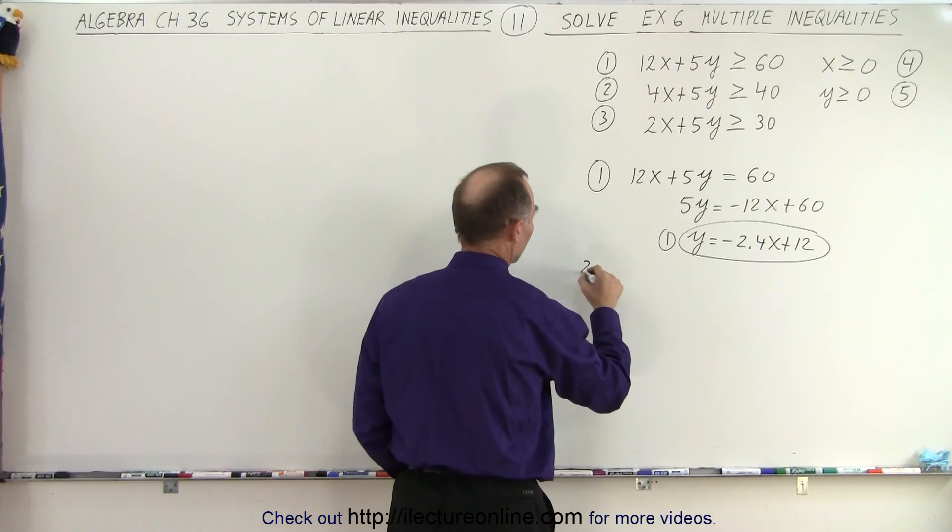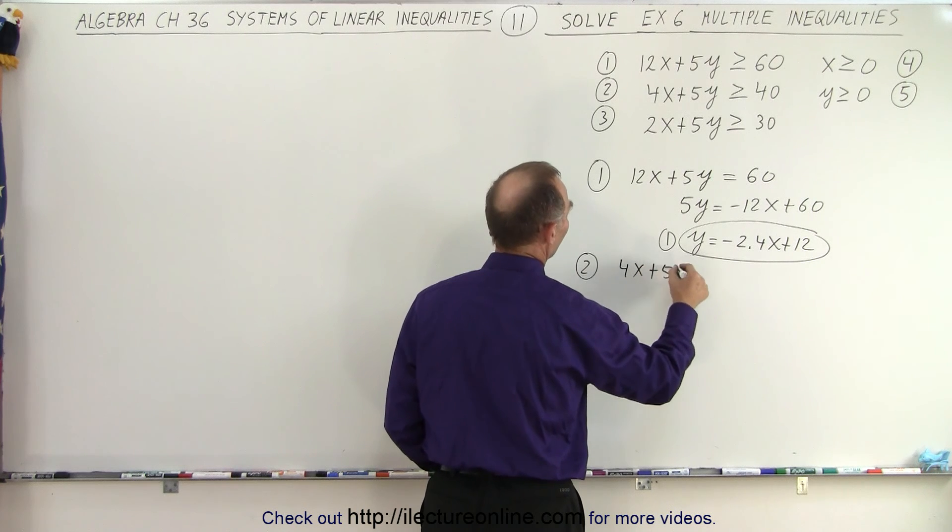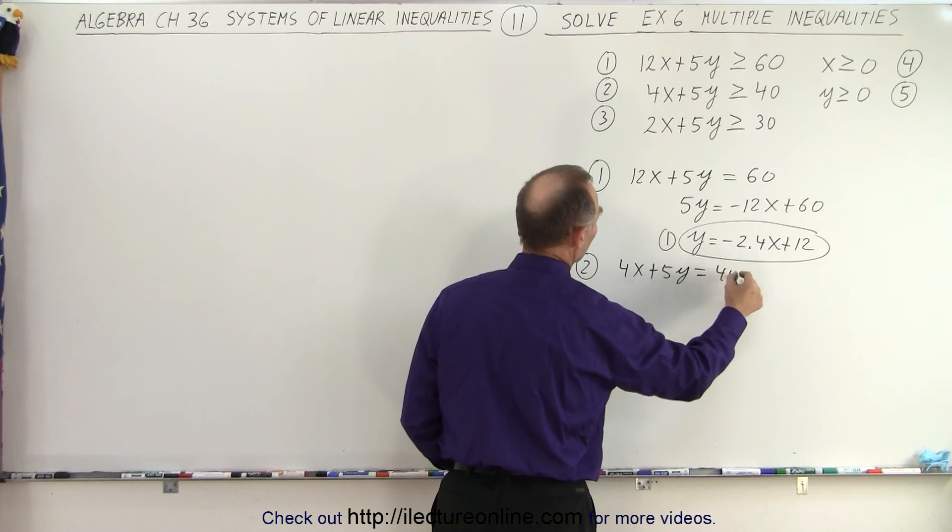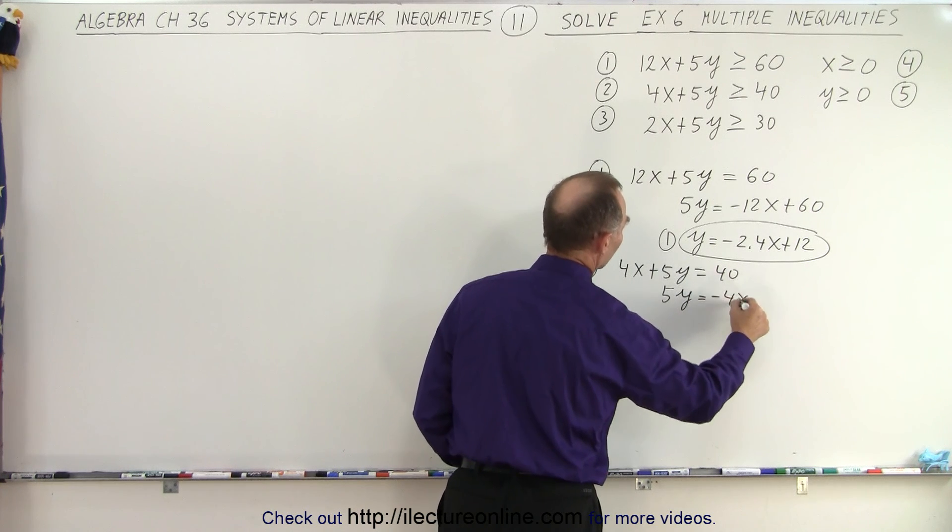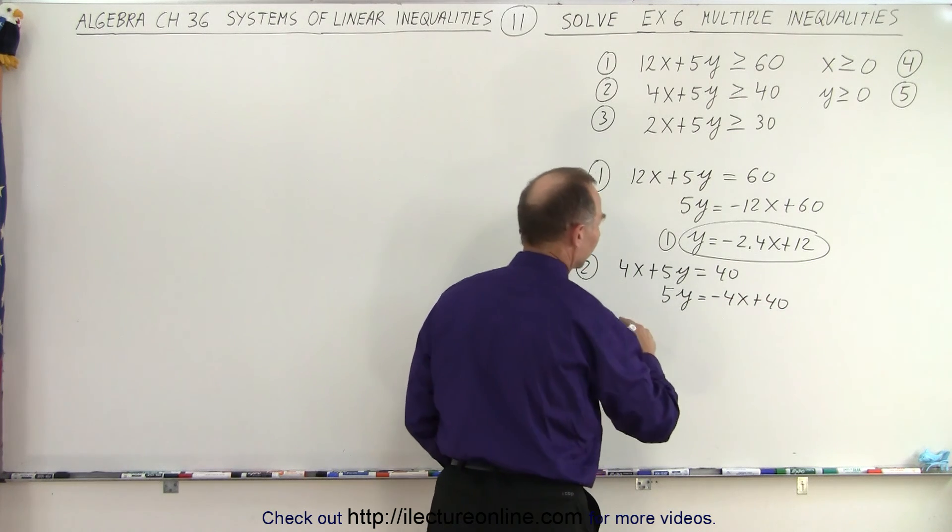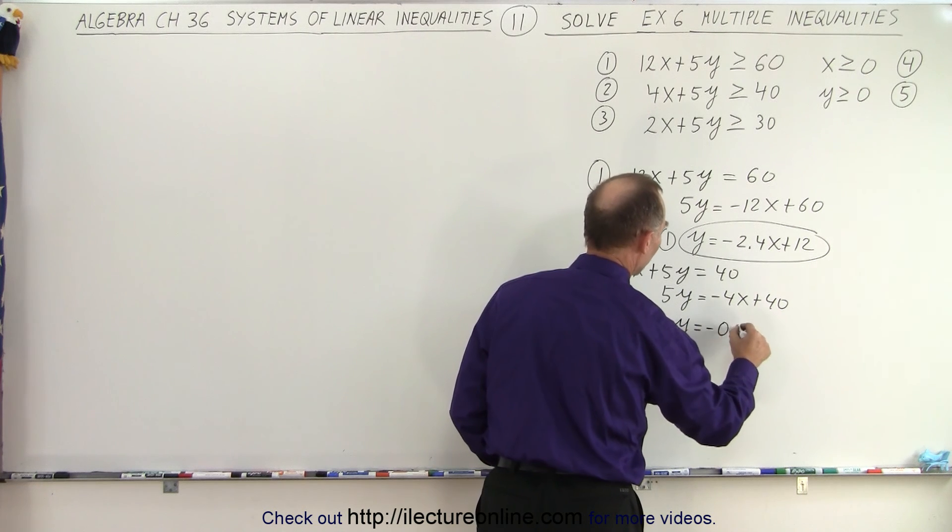For equation number two we have 4x plus 5y equals 40. 5y equals minus 4x plus 40. Divide everything by 5, y equals negative 0.8x plus 8.